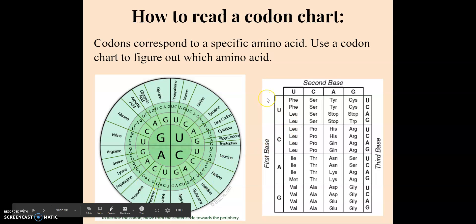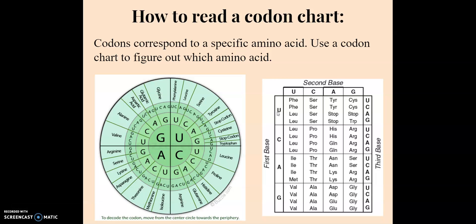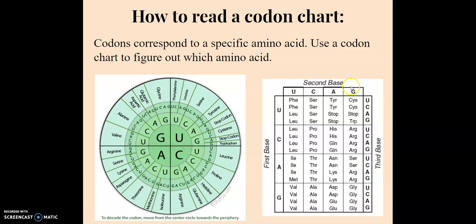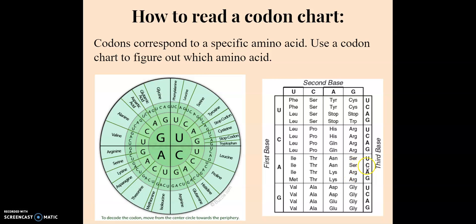The chart works a little differently. On the chart, you always start with the first base on the left. So let's do the same sequence: A-G-C. Start with the first base A, then look at the columns for the second base G, so we're in this row and this column. Now look for C — C lines up here with serine in this box. So that codes for serine. There are two different types of charts that you're going to need to learn how to read, and you'll get practice in this unit using those charts.